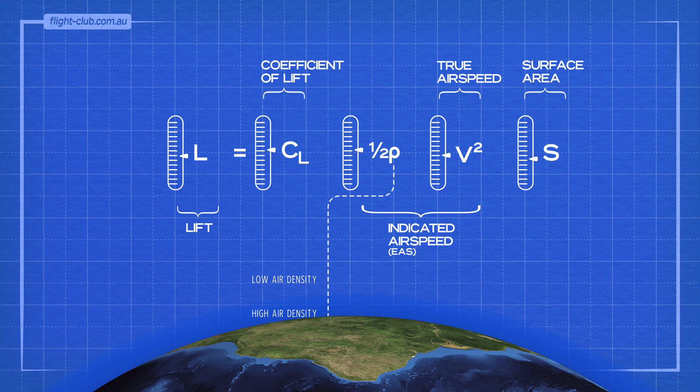From take-off to landing, the elements of the lift formula change continuously. But let's assume for a moment that lift, the coefficient of lift, and the wing surface area are constant, and see what happens to the airspeed as the aeroplane climbs up in the atmosphere.